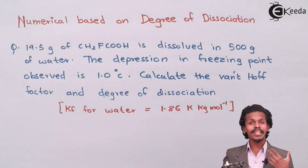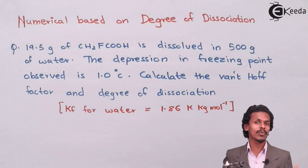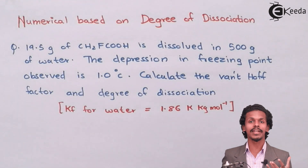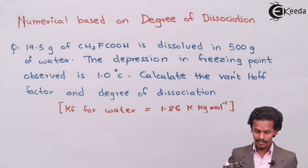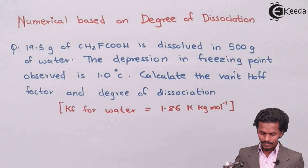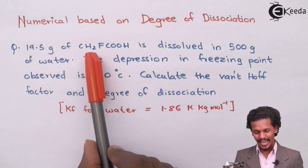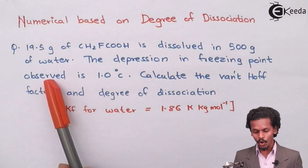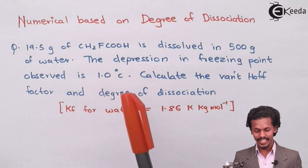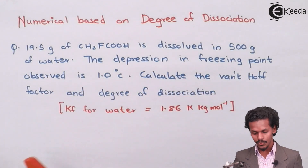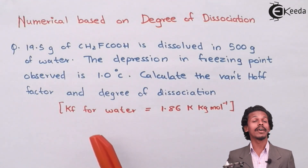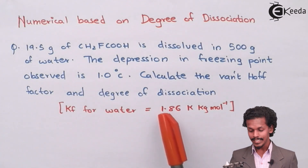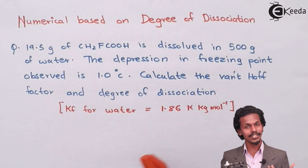There is a question on your screen which is based on how to calculate the degree of dissociation. 19.5 grams of monofluoroacetic acid is dissolved in 500 grams of water. The depression in freezing point observed is 1 degree Celsius. Calculate the Van't Hoff factor and degree of dissociation. The cryoscopic constant for water, Kf, is 1.86 Kelvin kg per mole.